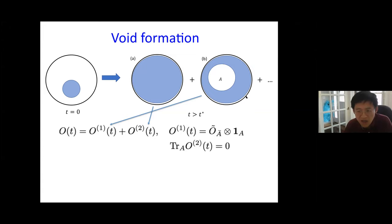[Q&A on void formation probability for initial states]: The random void distribution conjecture applies to general operators, not just typical ones. This includes density operators built from product states — say in a spin chain system with an initial product state — and void formation should apply to those too. There may be some very fine-tuned operators (like the identity almost everywhere) for which it doesn't apply. The void formation probability is also constrained by causality: if the system has an emergent causality structure, then the void formation is constrained by that.